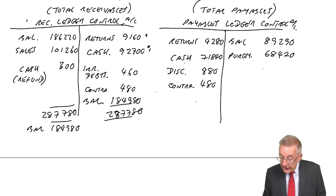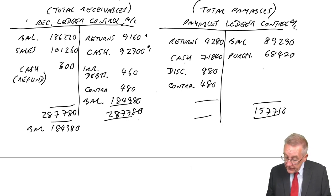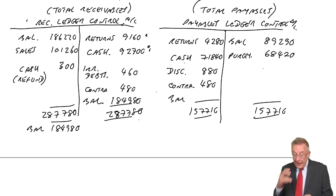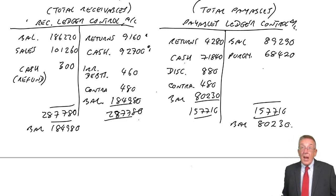As far as payables are concerned, the total of the credit side is 157,710. And therefore, the balance, minus 4,280, I get 80,230. And there we are.